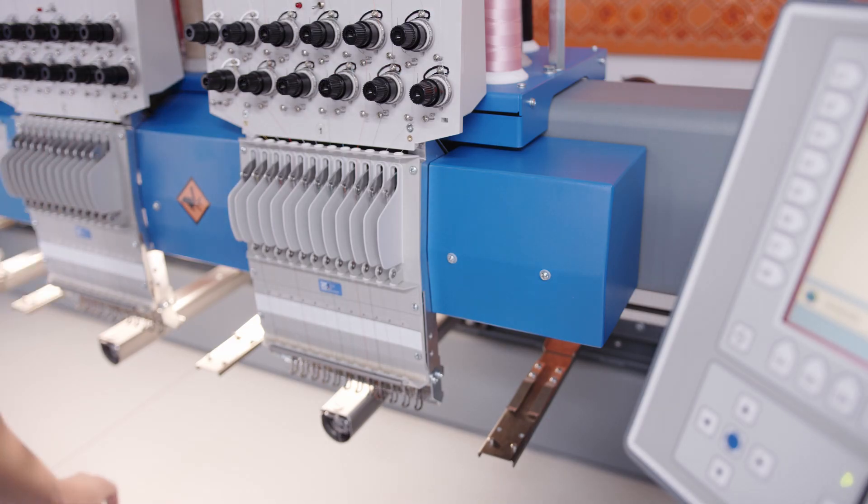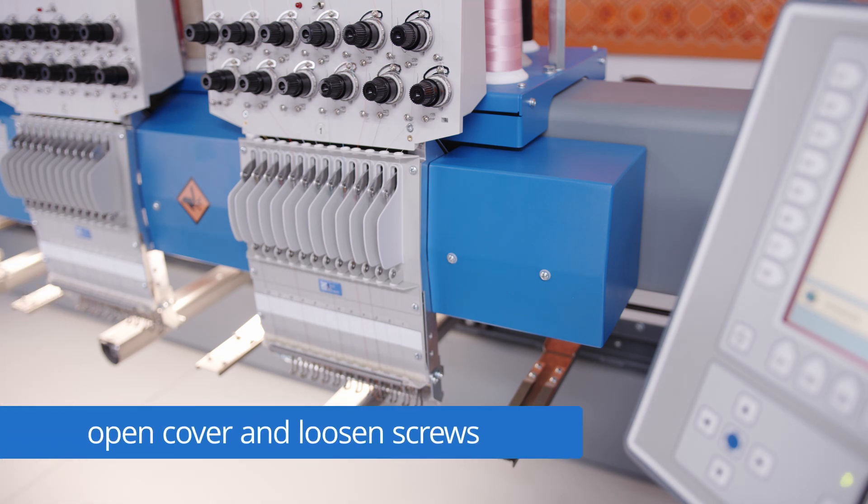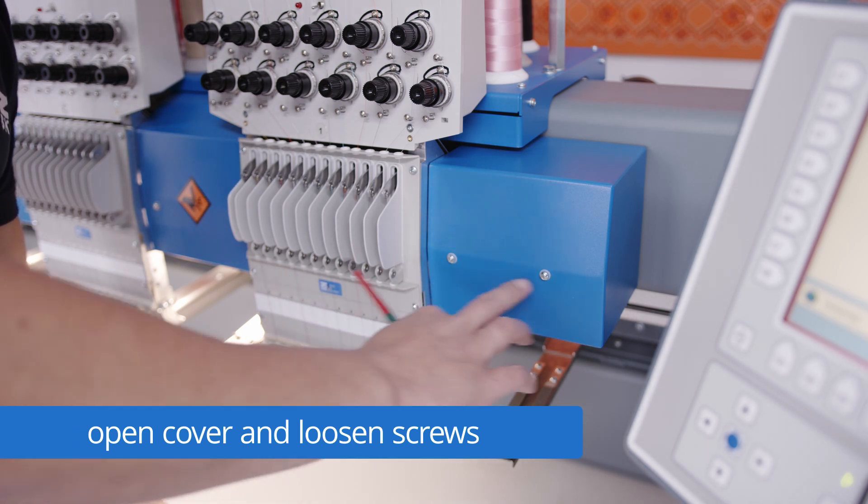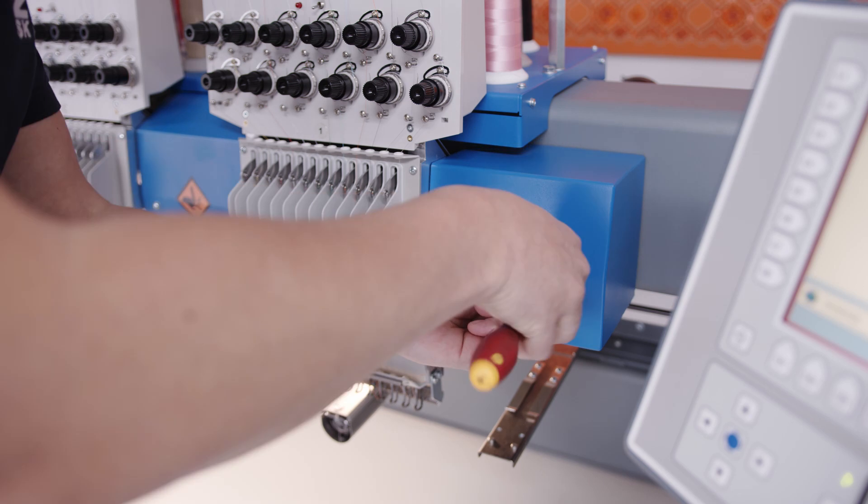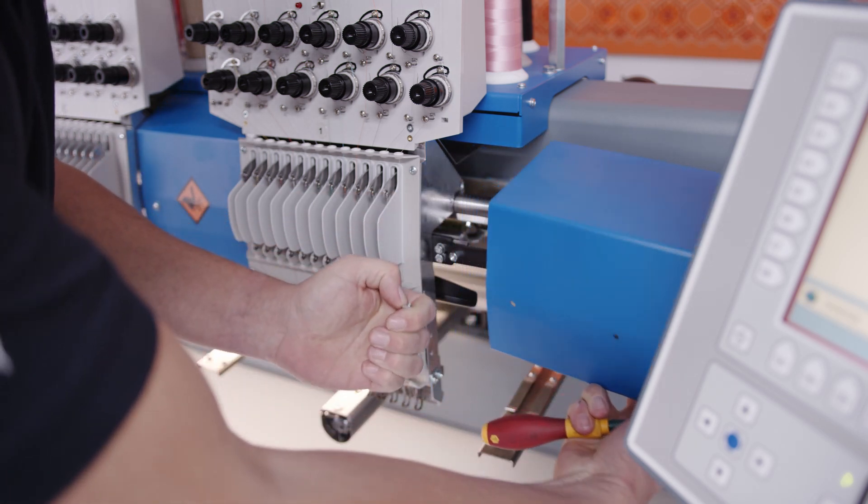To pin the machine and to block the upper shaft we have to open the cover right side of head number one. Therefore we have to loosen two Phillips screws with a Phillips screwdriver and remove the cover.